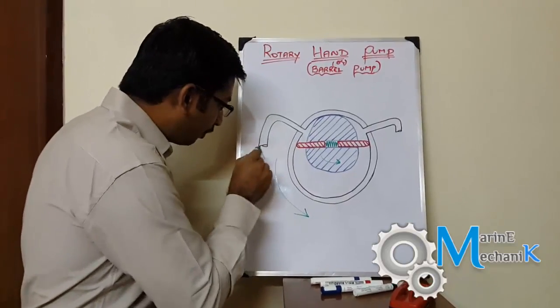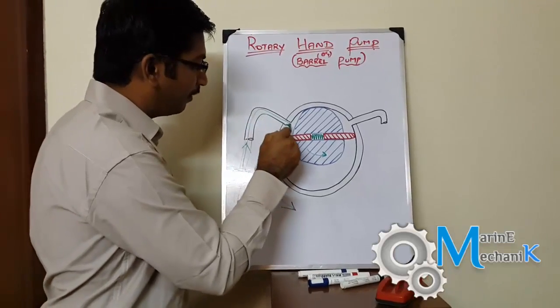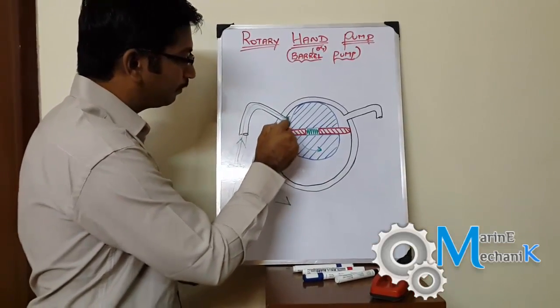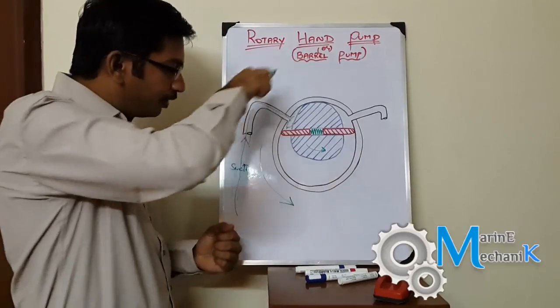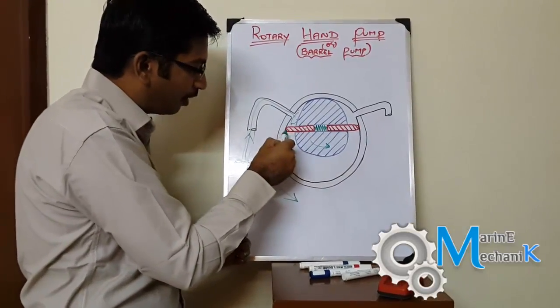So this is going to be the suction through which the oil is going to come and then fill up this space. And as I rotate this, this vane is going to come out like this.